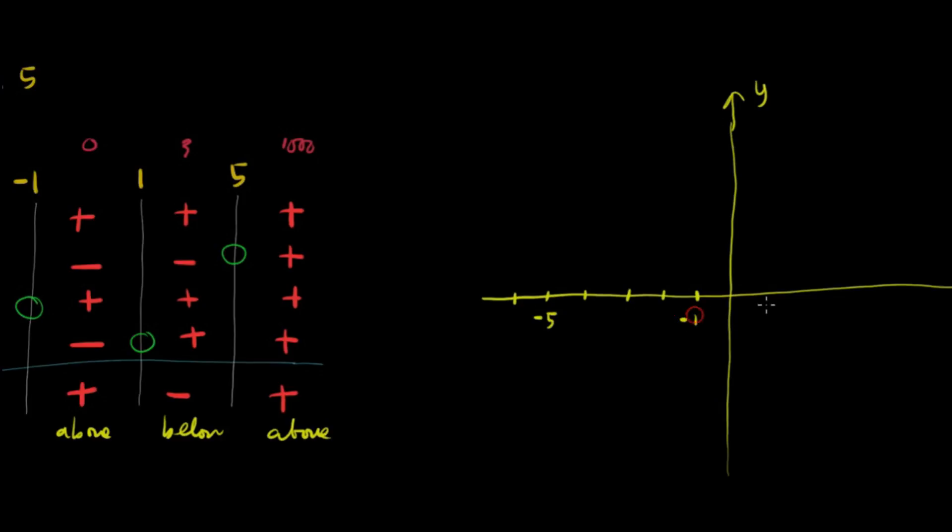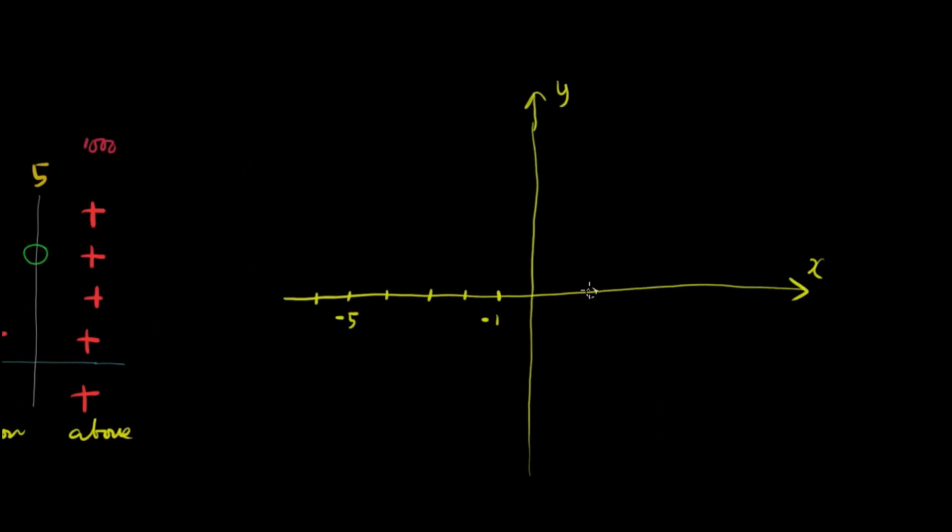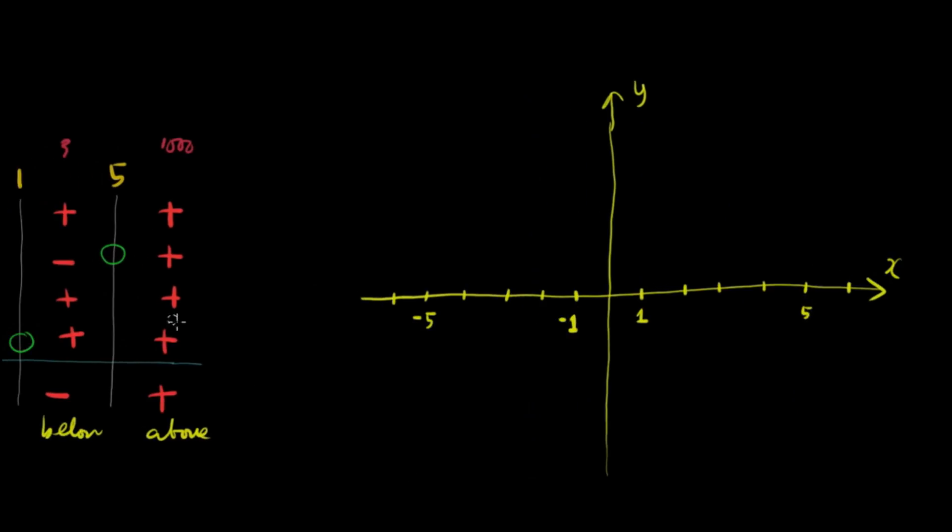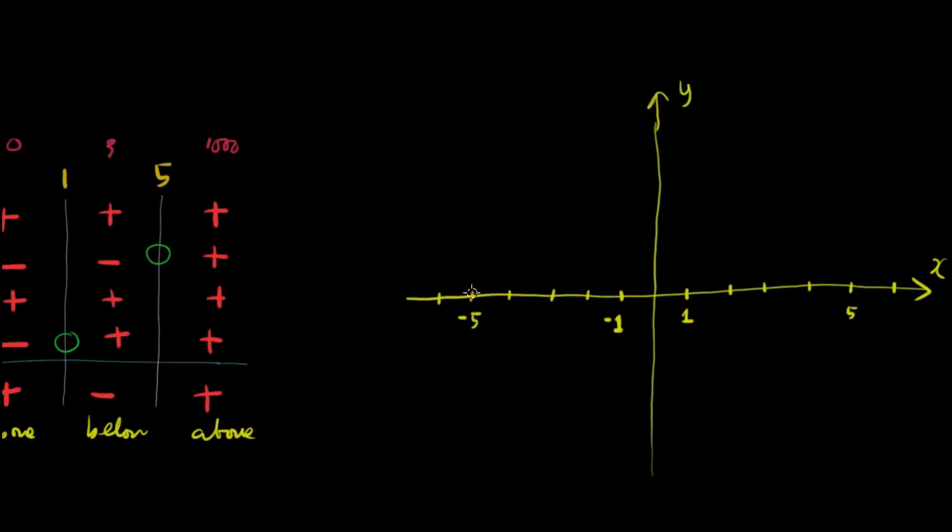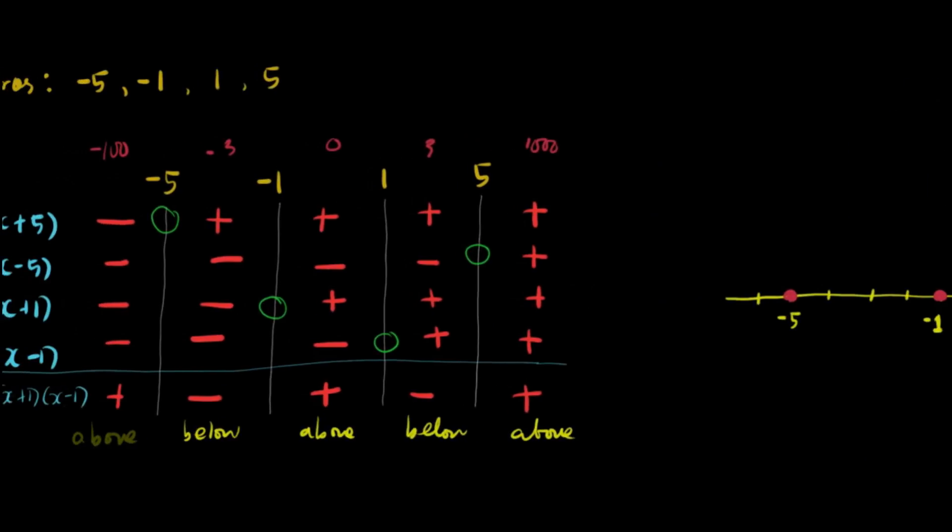We also have negative 1. Then, we have 1, 2, 3, 4, 5. So, we also have at 1. And at 5. Let's plot. So, we have negative 5. We also have at negative 1. We also have at 1. And then, at 5.